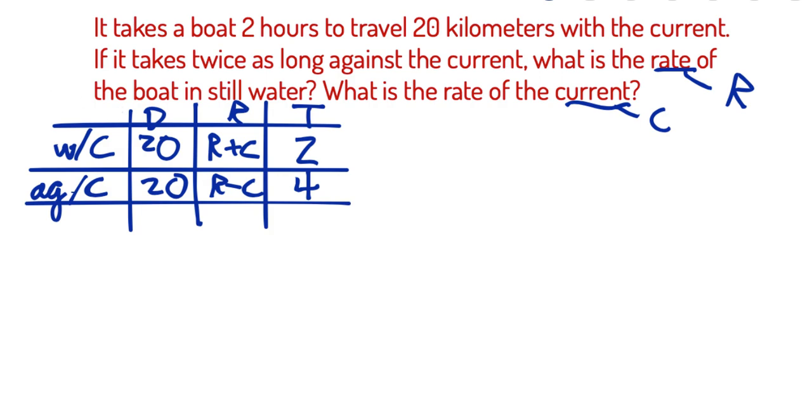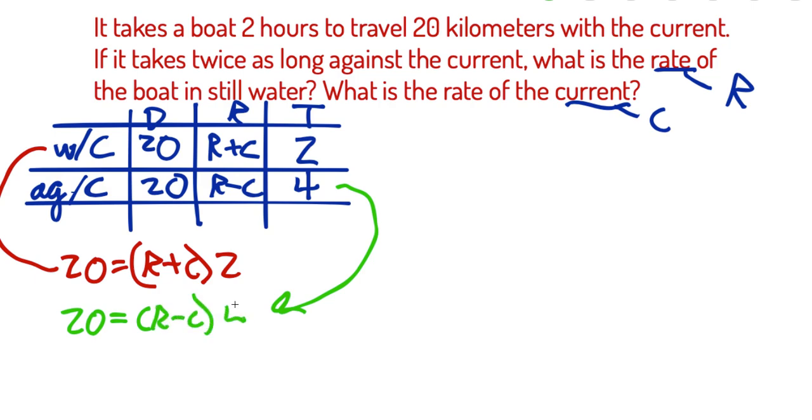So now we've got some equations. I'm going to set it up and simplify it pretty quickly. So with the current, we've got 20 equals R plus C times two, right? That's with the current. Now against the current, I'm going to set that up in green. So it also happens to be 20, and that's going to be R minus C in parentheses times four.